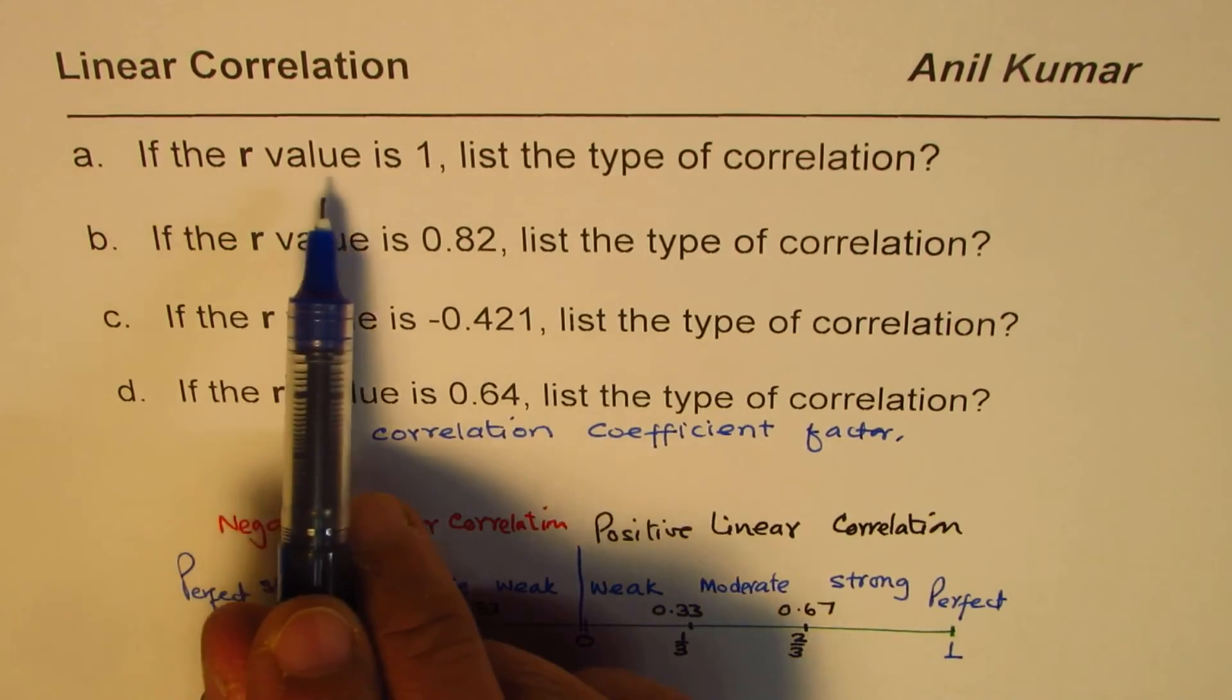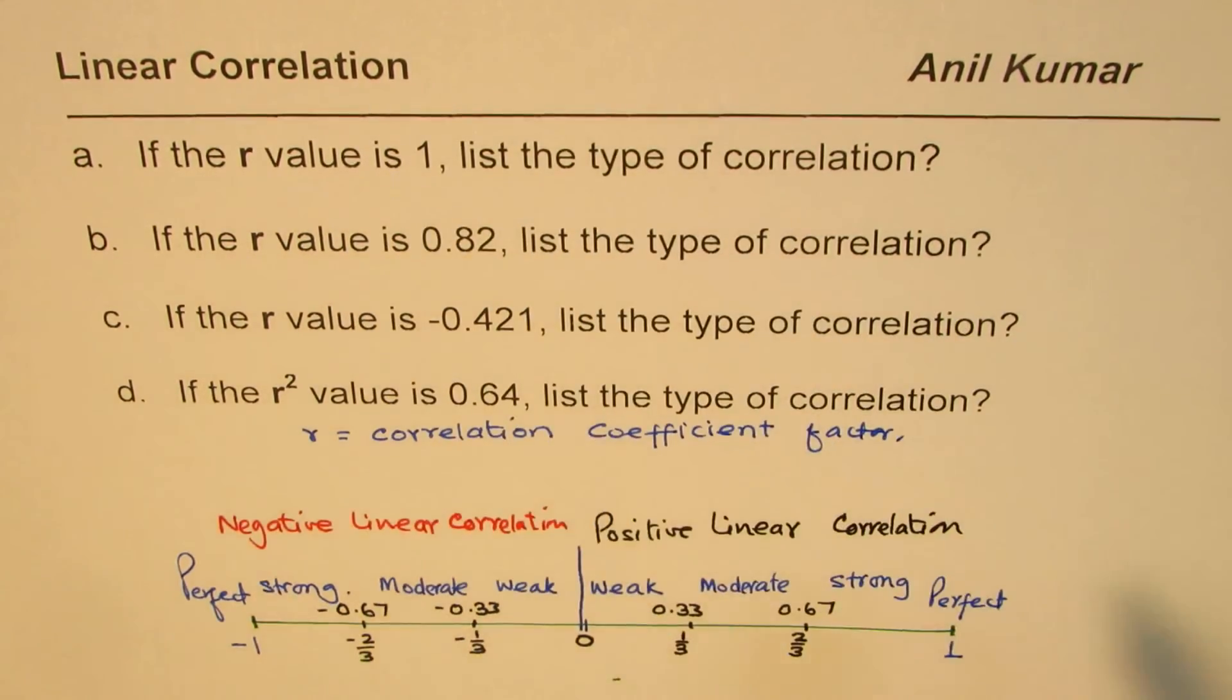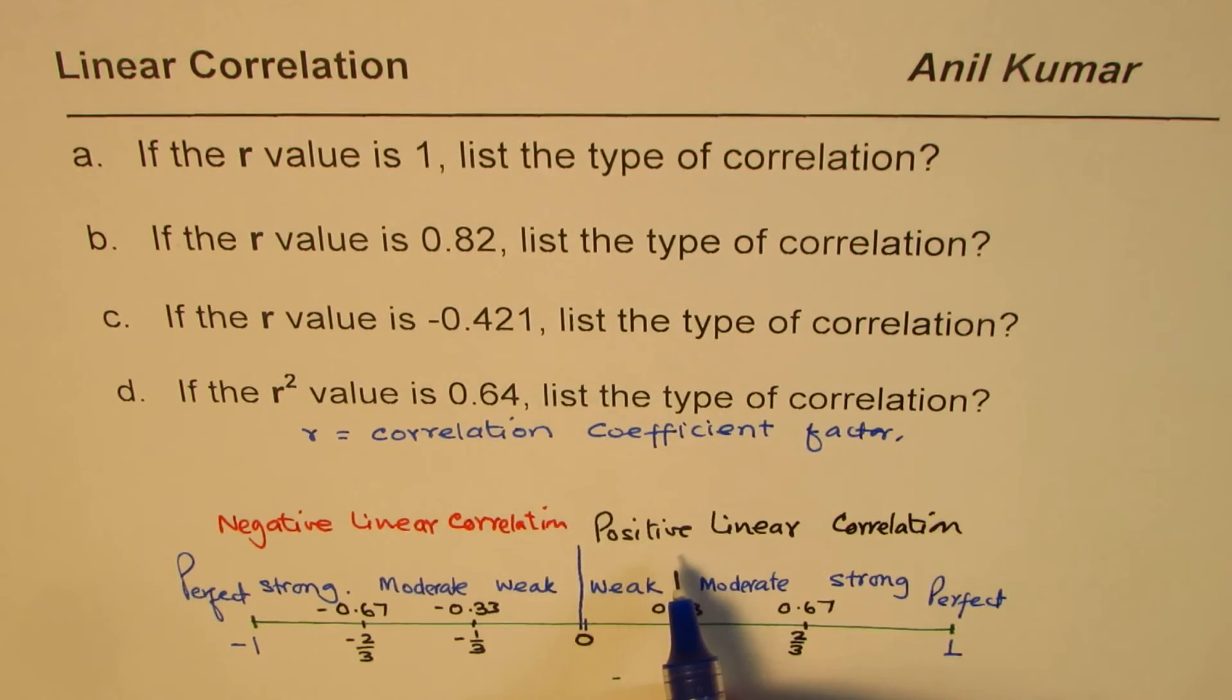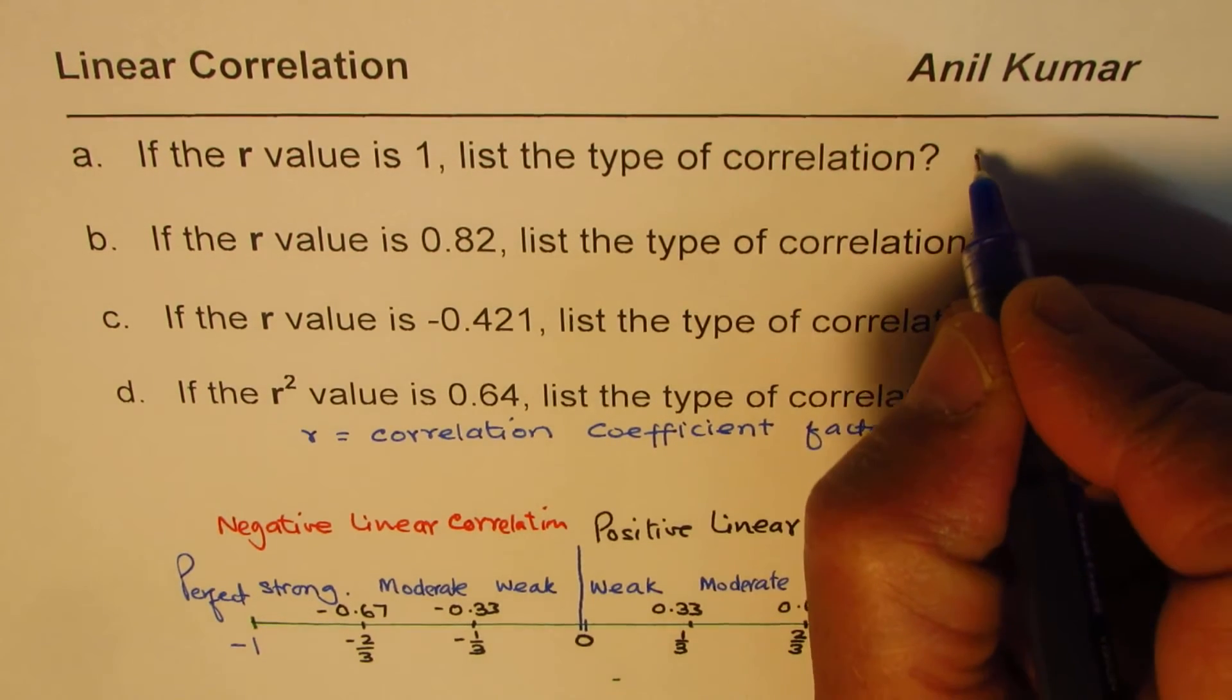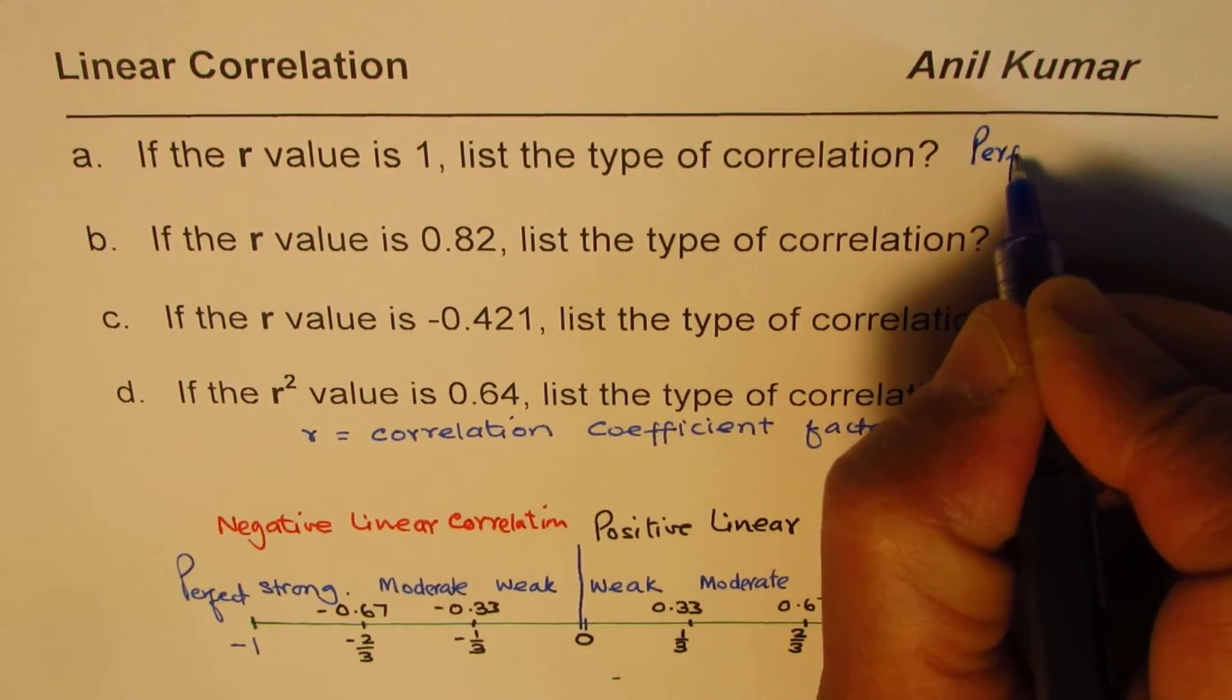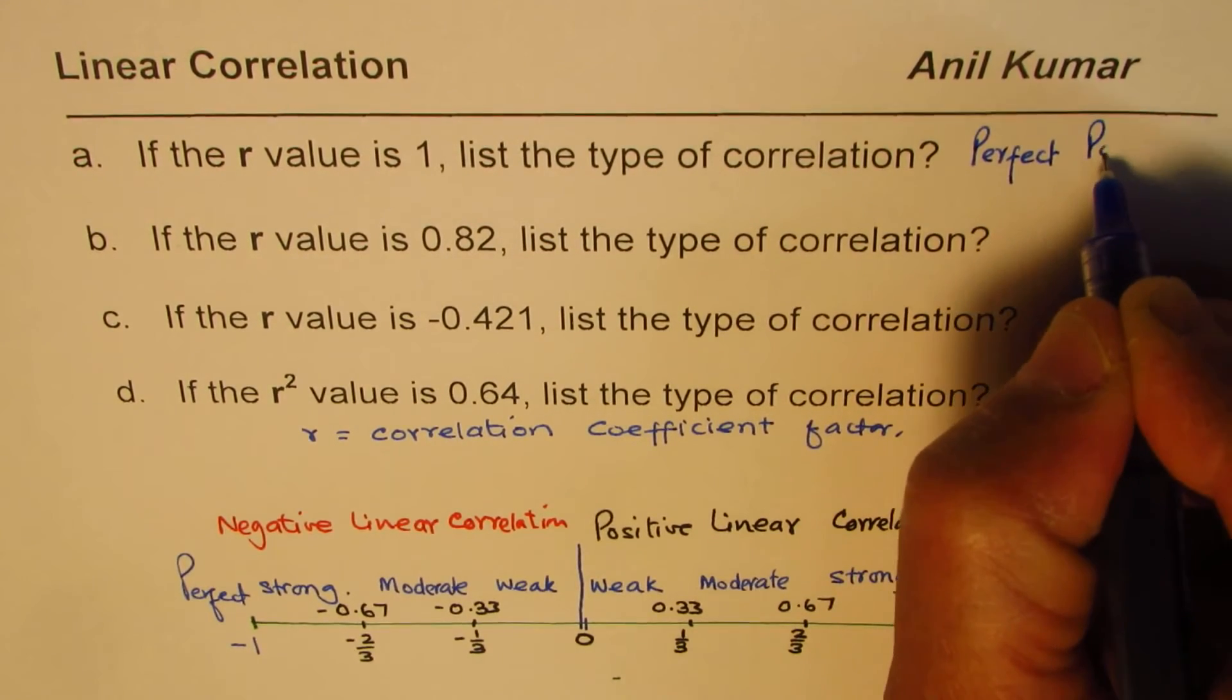So if the r value is 1, the type of correlation is perfect positive. So we can write this as perfect positive.